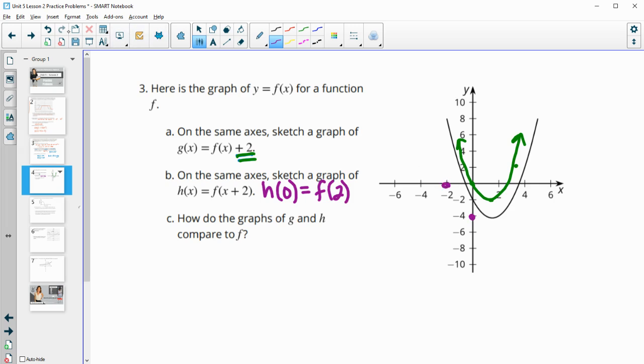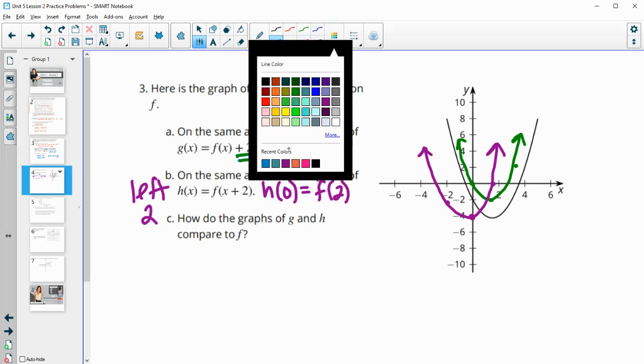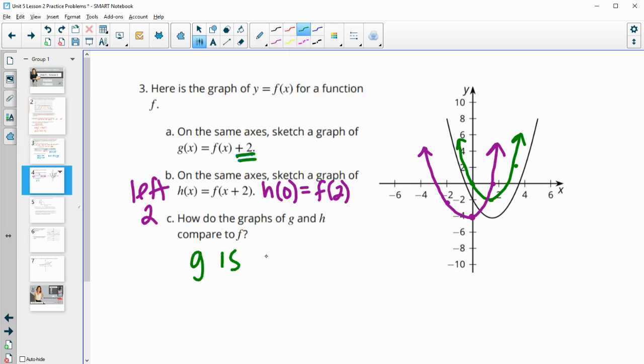So this is going to move everything to the left 2 units. So this x equals 0 is going to move over to negative 2. This one, where it's kind of at x equals 2, is going to move over to 0. This is going to move over 2 units, but it's just going to move to the left 2 units now. And then how do the graphs of g and h compare to f? So that's what we talked about here. So g is up 2 units or a shift up 2 units. And then h is left 2 units.